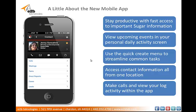Let's say, for example, that you're working an opportunity and you're on your way to meet a prospect, but you're running late. By opening the Sugar mobile app, you'd be able to see you have a meeting right there on the home page, click it to view the contacts at the meeting, and then just click to call them to let them know that you're running a little behind. The navigation is simple to use and allows you to quickly view and log any information in the system right from your tablet or mobile phone.